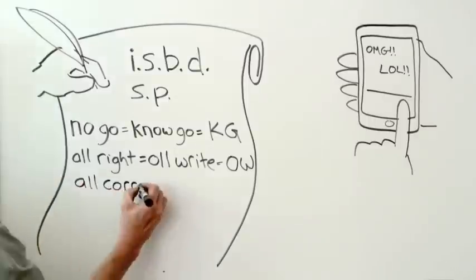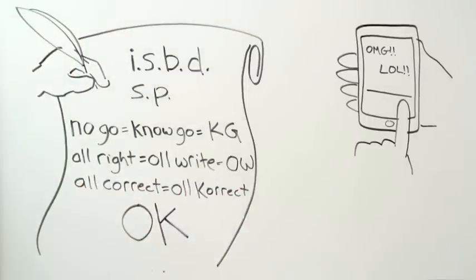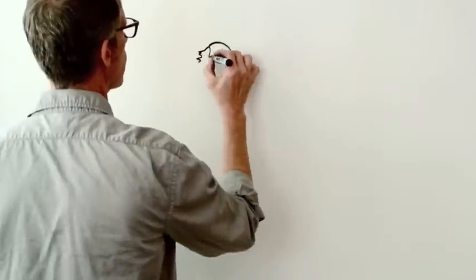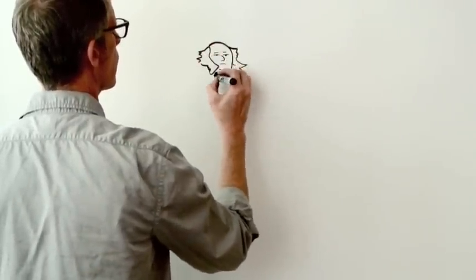KG for no-go, OW for all right. So OK for all correct. Cute, right? But we don't say ISBD or KG anymore. Why did OK stick around?